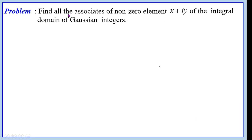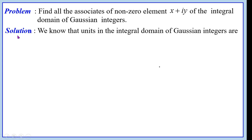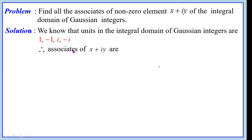Problem: Find all the associates of a nonzero element x + iy of the integral domain of Gaussian integers. Solution: We know that the units of the integral domain of Gaussian integers are 1, −1, i, and −i.